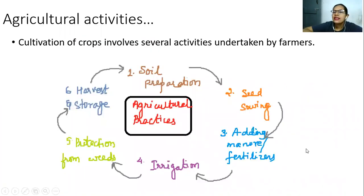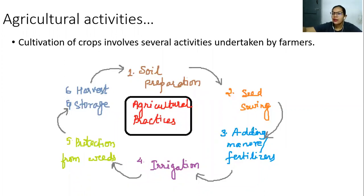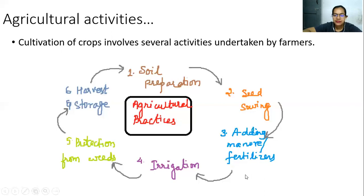Let us discuss all the agricultural activities. Cultivation of crops involves several activities undertaken by farmers. First is soil preparation, where you loosen the field. Next is seed sowing. Then you add manure or fertilizers. After that comes irrigation — giving water to the crops. And then protection from weeds.